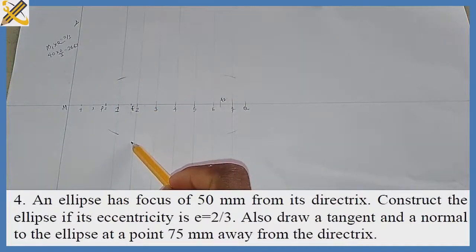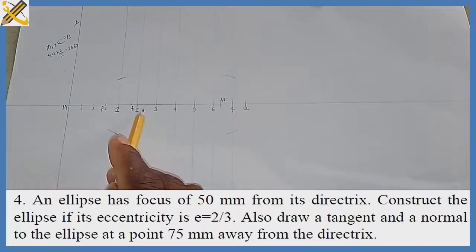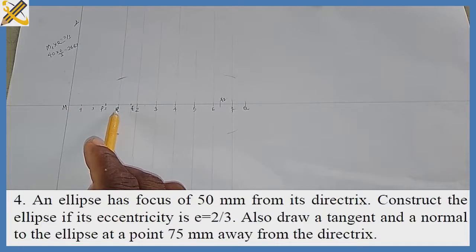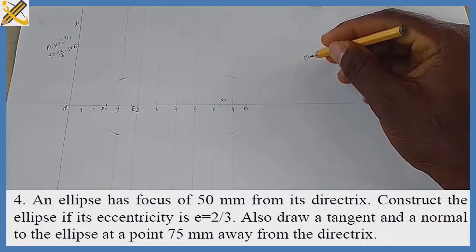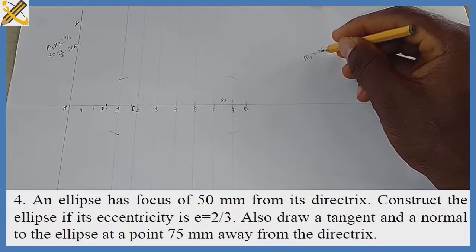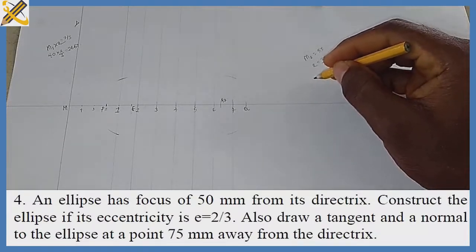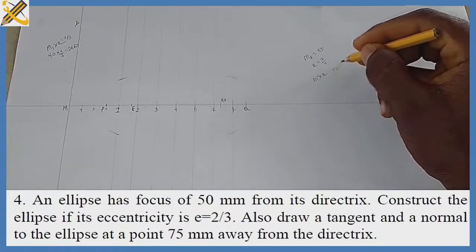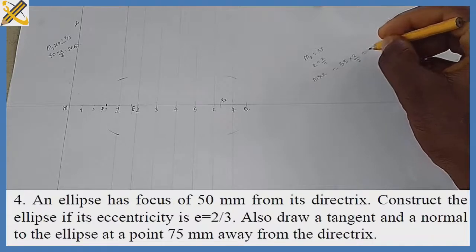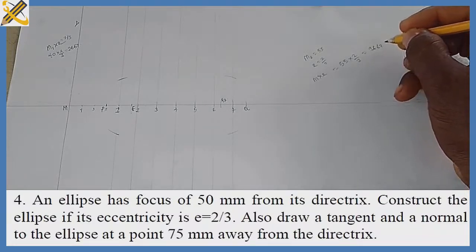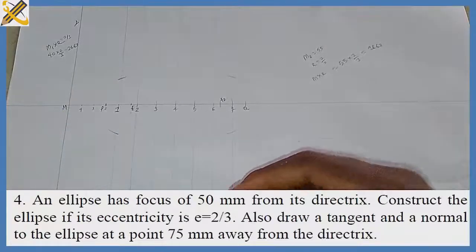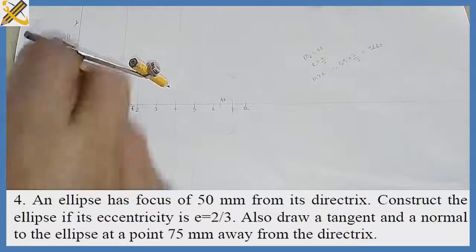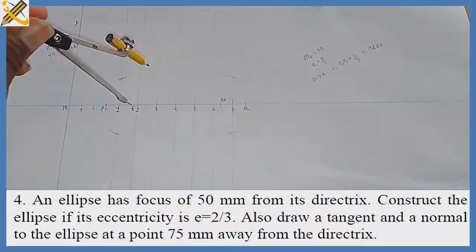To get the arc trace of our ellipse on mark 2: the distance from M to mark 1 is 40, and from mark 1 to mark 2 is 15, so M2 equals 55. Applying the formula: M2 times e = 55 times 2/3, which gives 36.67. With my compass I pick 36.67.